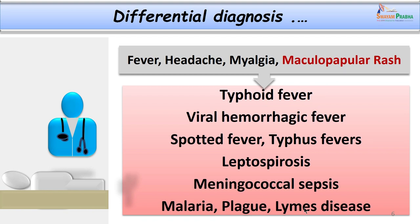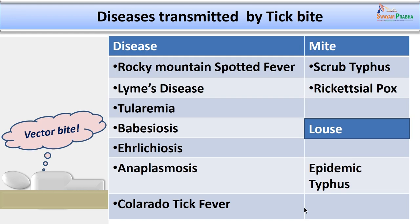It is important to understand what diseases are transmitted by vectors. The diseases transmitted by tick include Rocky Mountain spotted fever, Lyme disease, tularemia, babesiosis, and ehrlichiosis. The diseases transmitted by mite include scrub typhus and rickettsial pox. Similarly, the disease transmitted by louse is epidemic typhus.